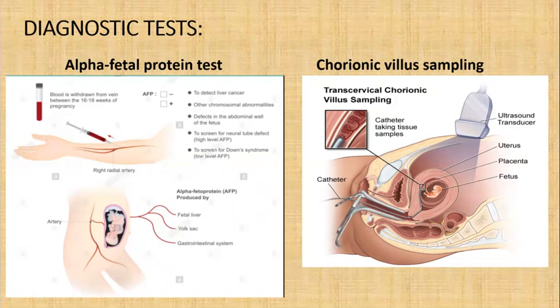Remember there could be complications like bleeding, spontaneous abortion, and rupture of membranes. Rh-negative mothers should receive Rho-D immunoglobulin after the test to prevent Rhesus isoimmunization. An ultrasound guide is used while the catheter collects a sample of fetal placental tissue. Full blood is required for this procedure.